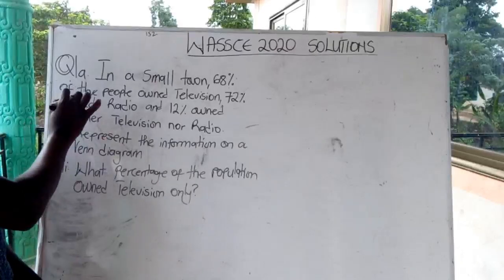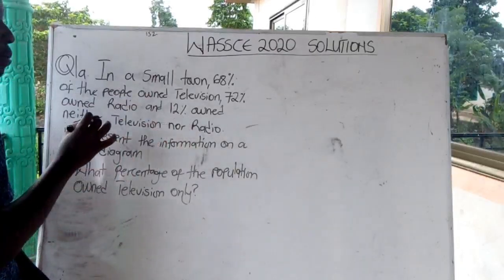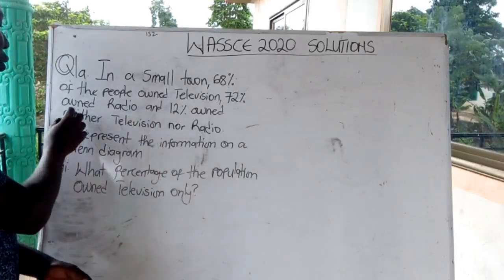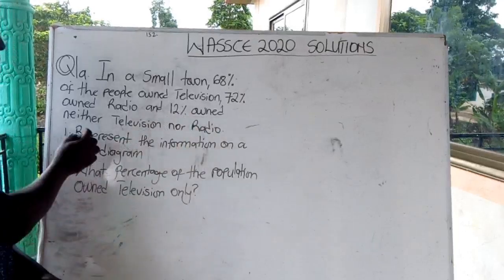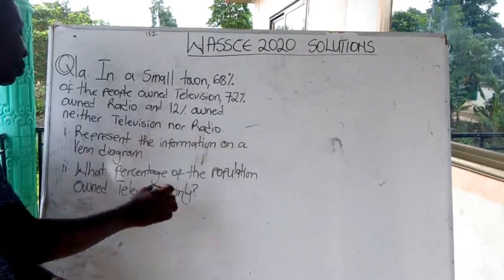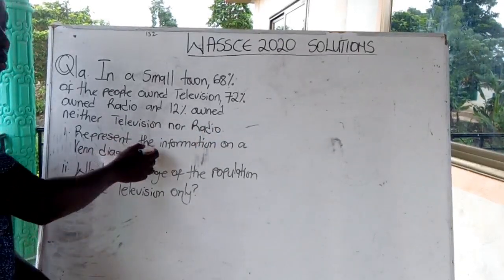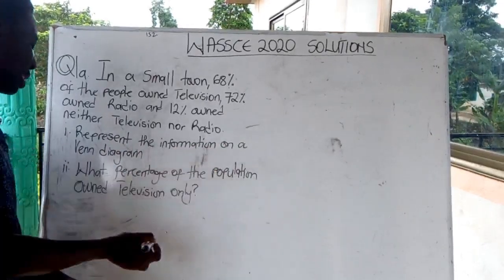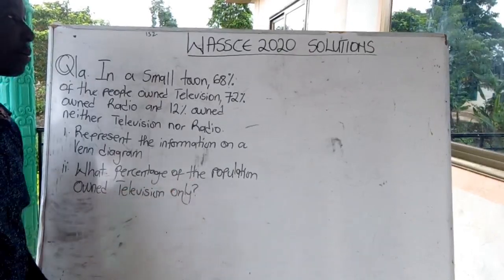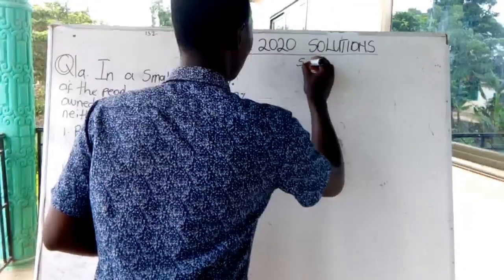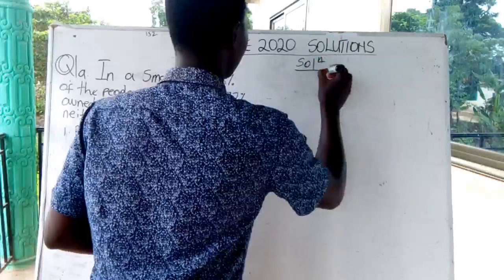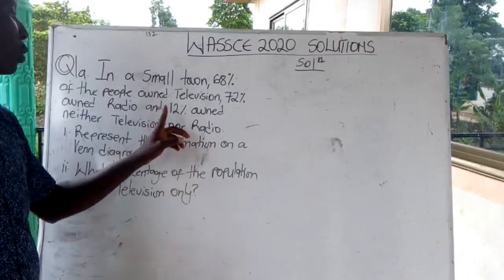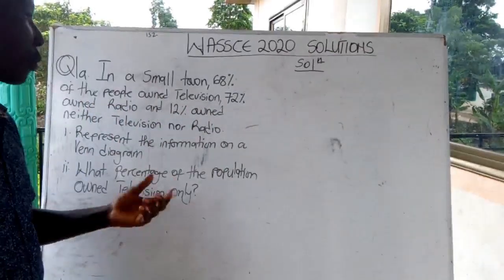Question one: In a small town, 68 percent of the people own a television, 72 percent own a radio, and 12 percent own neither television nor radio. Represent the information on a Venn diagram. Part two: what percentage of the population own television only? Let's start the solution.